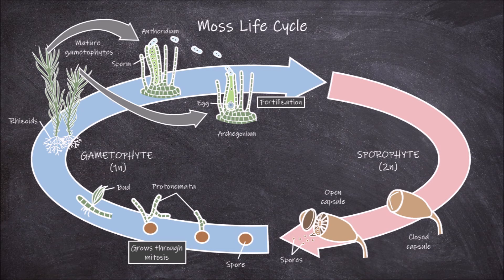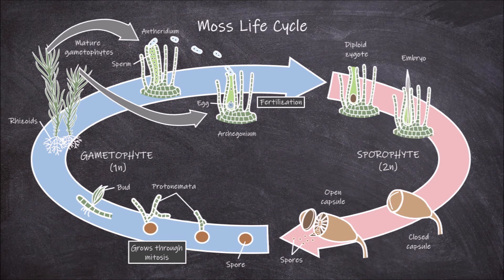Once fertilization occurs, the diploid zygote is formed within the archegonium. The zygote continues to grow through mitosis, first into an embryo, then into what is known as the sporophyte. The sporophyte grows up and out of the archegonium, and as such are found on the female gametophytes.